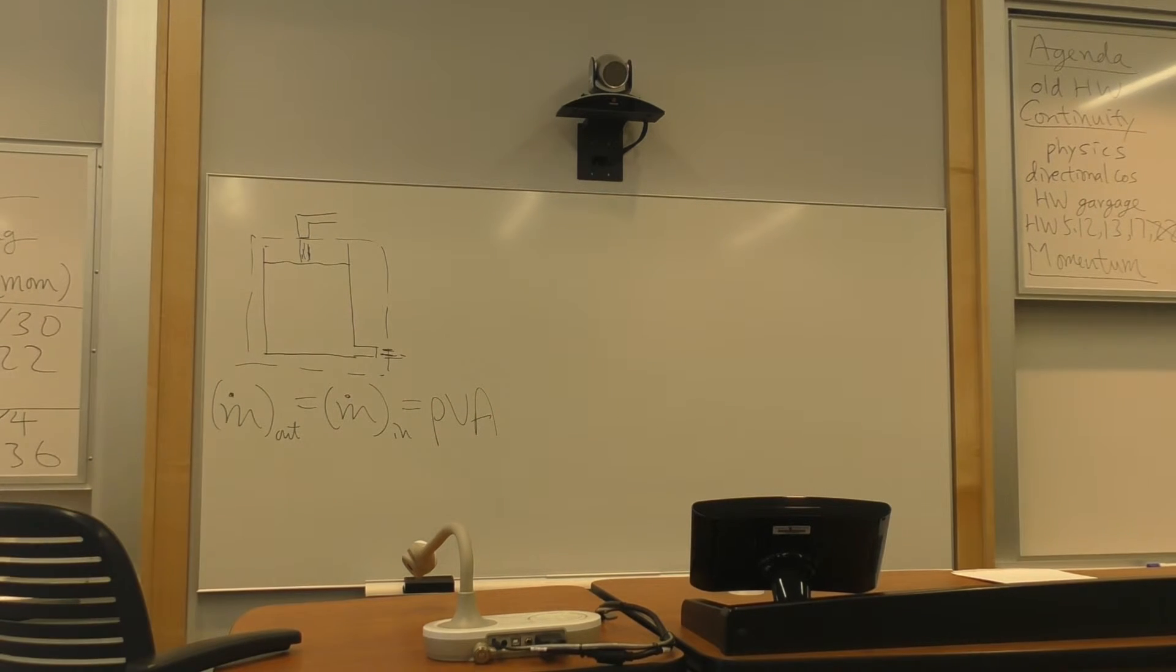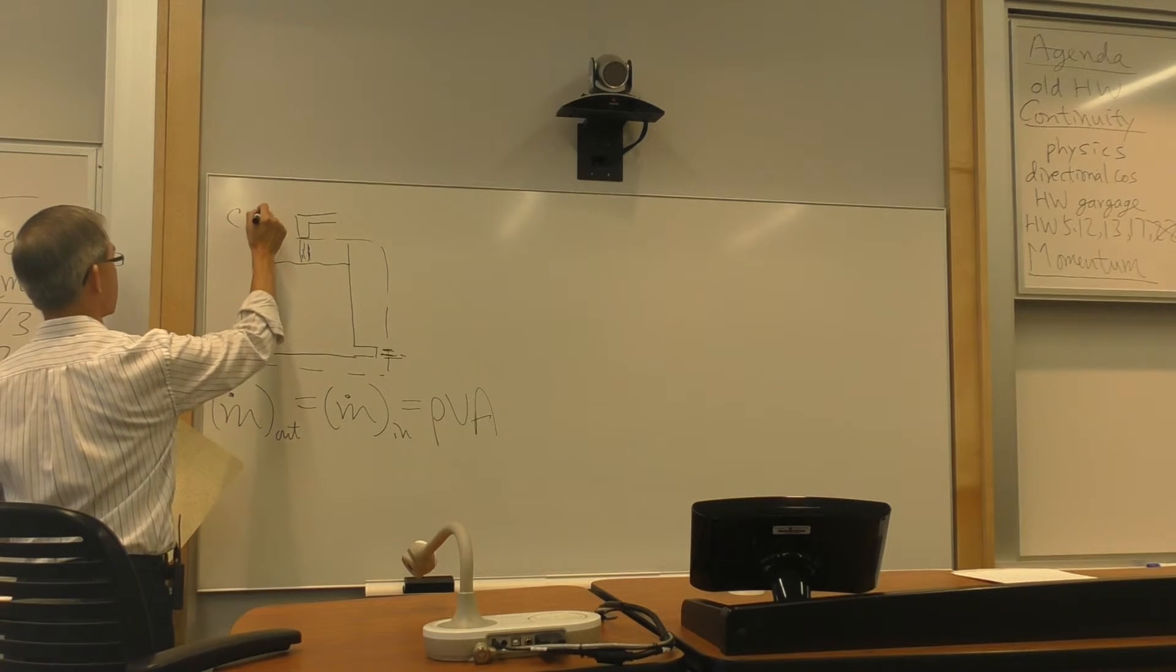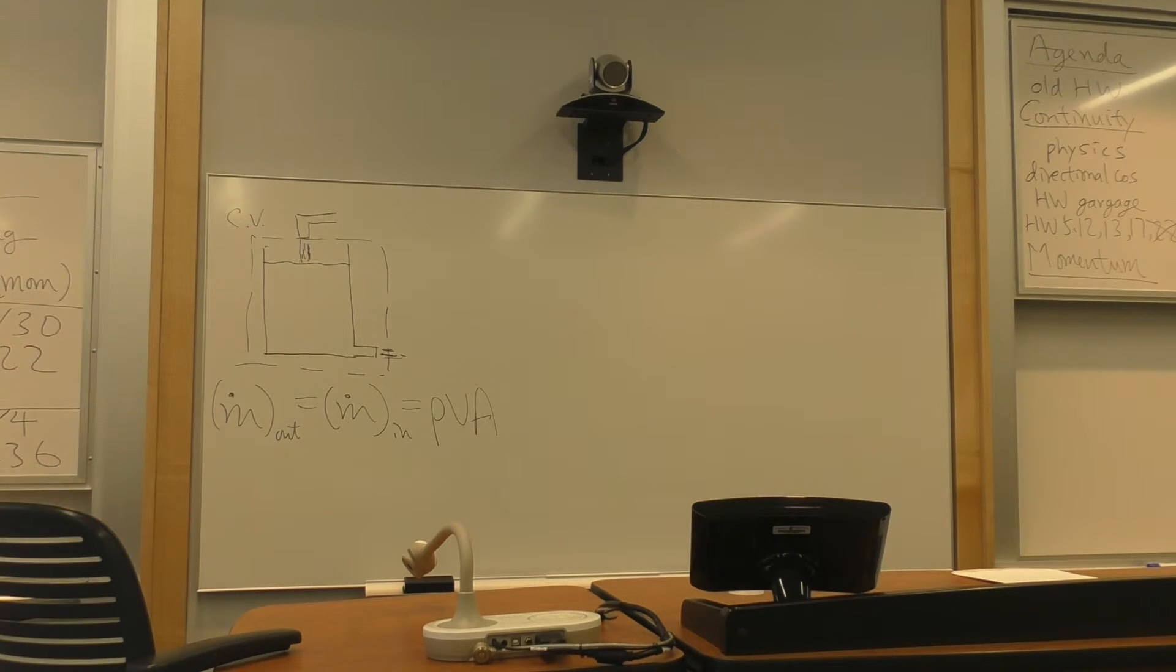Is that this m dot, which is mass flow rate in kilogram per second, in and out, will be equal. And they can be calculated by the product of rho, v, a. What assumption did I make when I said that?